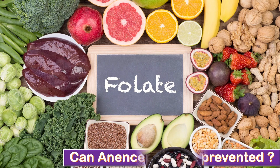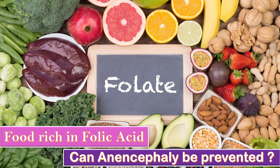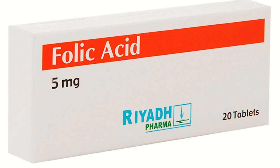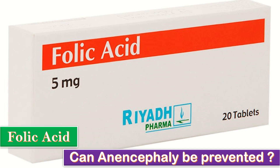Can anencephaly be prevented? There is no way to prevent this 100%. However, eating food rich in folic acid — that is, getting enough folic acid before and during pregnancy — can help prevent neural tube defects such as anencephaly. The standard recommendation is to take folic acid at least one month before trying for pregnancy and continue for the first three months. The recommended dose is about 5 mg, which is slightly more than 10 times the recommended dose for someone who has not had a baby with such an abnormality.